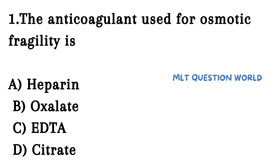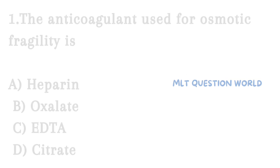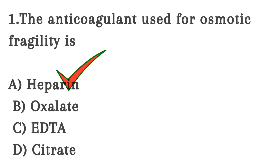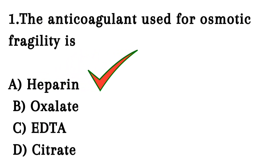Question number 1. The anticoagulant used for osmotic fragility is: Option A. Heparin, Option B. Oxalate, Option C. EDTA, Option D. Citrate. We have already learned about anticoagulants in detail — you can watch it from the channel. The anticoagulant used for osmotic fragility is Heparin.